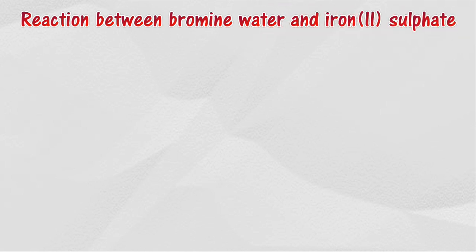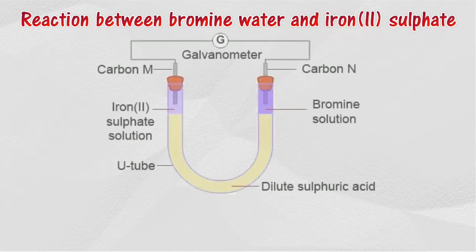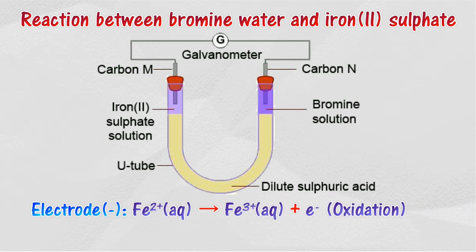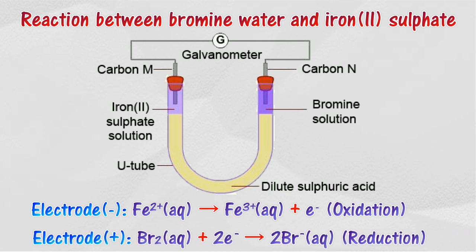Transfer of electrons at a distance for the reaction between bromine water and iron(II) sulfate solution. In this reaction, iron(II) ion releases electrons and is oxidized to iron(III) ion. The carbon electrode immersed in iron(II) sulfate solution acts as the negative electrode. Bromine receives electrons and is reduced to bromide ion. The carbon electrode immersed in bromine water acts as the positive electrode.